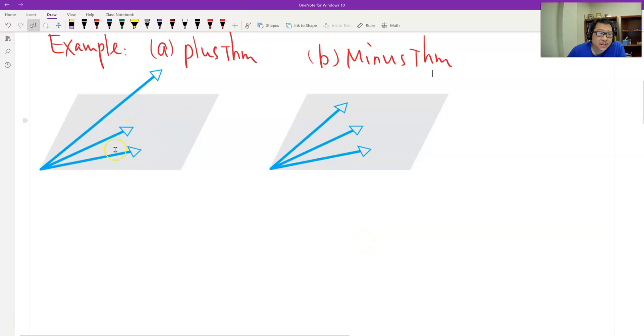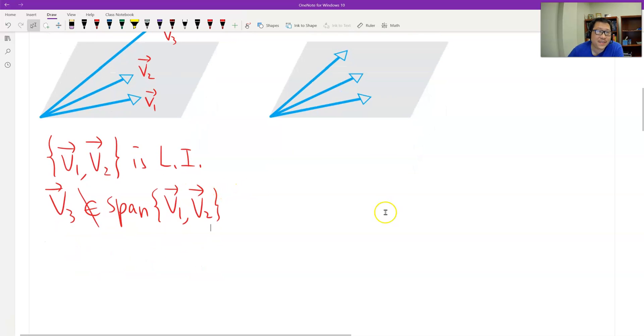The second is the minus theorem. So let's look at example A, the plus. What does this mean? This means that if we have two vectors spanning a plane, and then another vector is outside the span of the first two, and then we put these three together, they are linearly independent. So if this is V1, V2, and V3, first V1, V2 are linearly independent. And then the second condition: V3 does not belong to the span. And then we have the conclusion: if we add V3 to V1 and V2, the three vectors together are linearly independent.